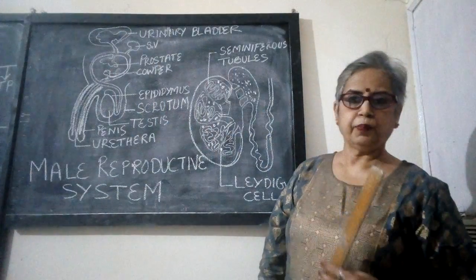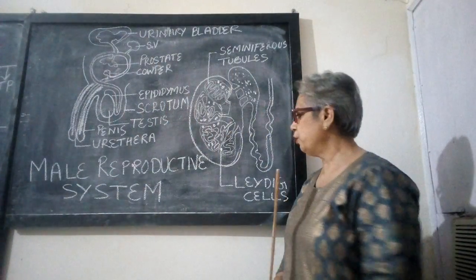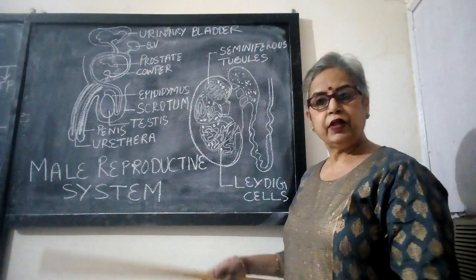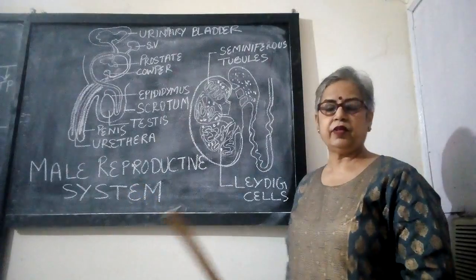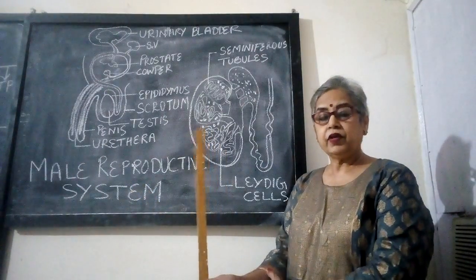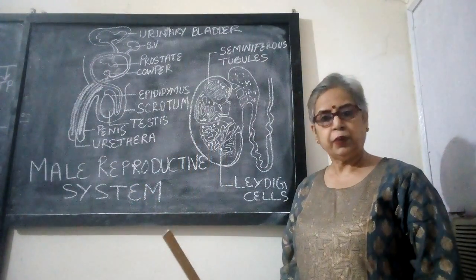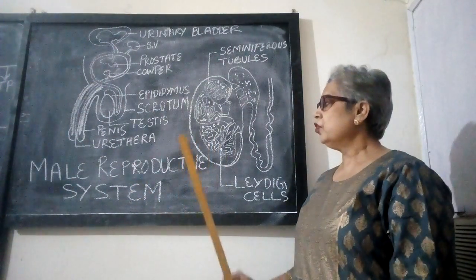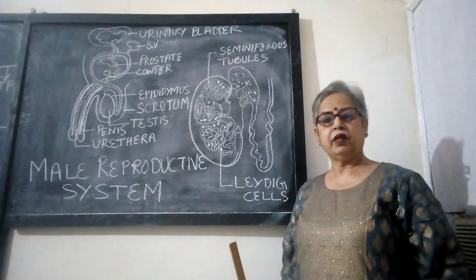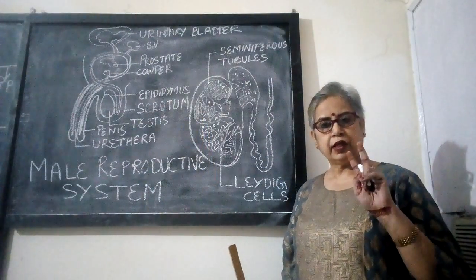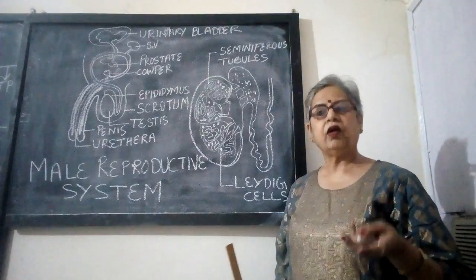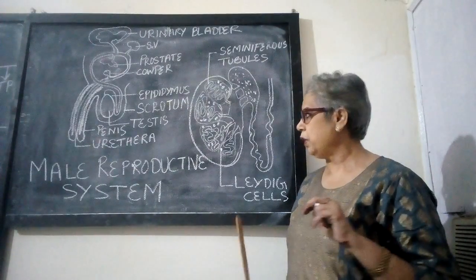Hello students. Today's topic is the male reproductive system. When we talk about the male reproductive system, the first thing is what are the various parts. The parts of the male reproductive system are divided into two types: primary parts and secondary or accessory parts.